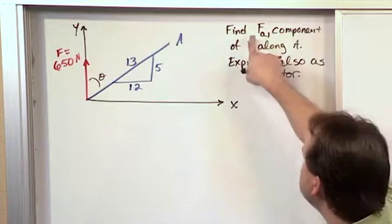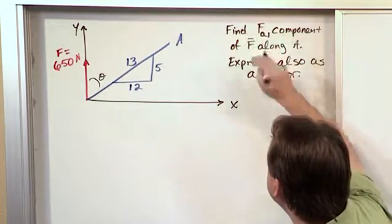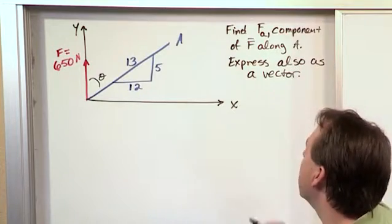Now the question is find F sub A, the component of F, the component of this vector F that lies along the line A.